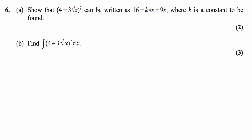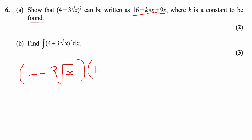Question 6a: show that (4 + 3√x)² can be written in the form 16 + k√x + 9x, where k is a constant to be found. To do this, we expand the double bracket: (4 + 3√x) times (4 + 3√x), then simplify by collecting like terms.